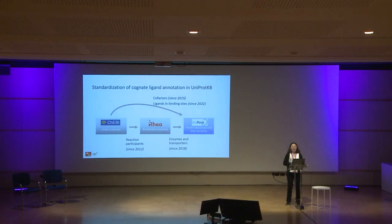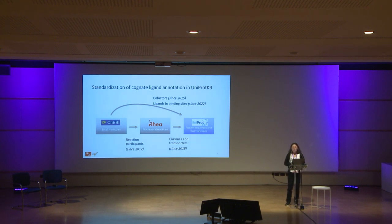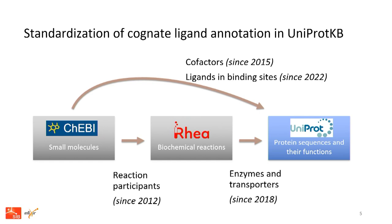Some years ago, we started the standardization of ligand annotation in UniProt to improve their representation, because the ligands were all described in free text form, and also to improve interoperability. We started in 2015 by describing the cofactors using the chemical ontology ChEBI. Then in 2018, we introduced RheA in UniProt to annotate reactions performed by enzymes and transporters — RheA itself is based on ChEBI to describe reaction participants. Last year, we tackled the ligands that were in binding site annotations.